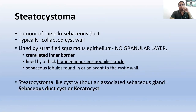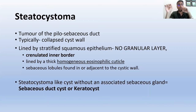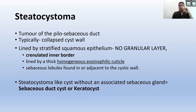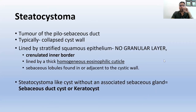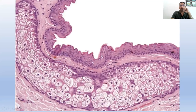Steatocystoma is a tumor of the pilosebaceous duct, typically with a collapsed cyst wall lined by stratified squamous epithelium, much like an infundibular cyst, but with no granular layer because the sebaceous duct does not have one. The most important feature is a crenellated inner border lined by a thick homogenous eosinophilic cuticle. It was believed that finding sebaceous lobules in or adjacent to the cyst wall is characteristic, but there are cases where sebaceous glands are not found — these are called sebaceous duct cysts. They are all derived from the sebaceous duct, and if you see this typical crenellated inner border with an eosinophilic cuticle, with or without a sebaceous gland, this is a sebaceous duct cyst or steatocystoma.